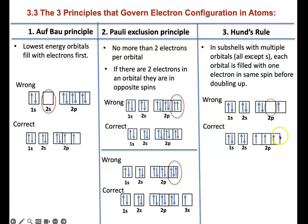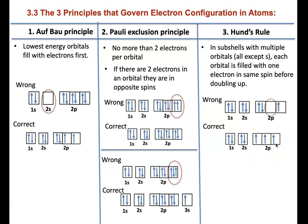To correct it, every orbital must receive one electron before you double up. If you have four electrons in the p subshell, the fourth electron goes in the downward direction into an already half-filled orbital. A fifth fills the next, and the sixth completes it — then the whole subshell is filled.